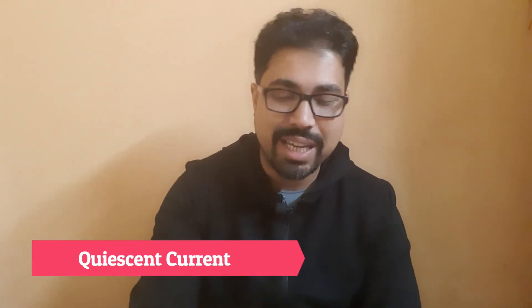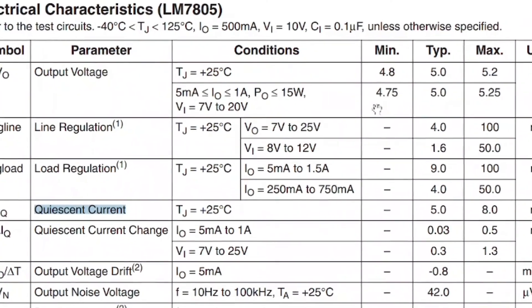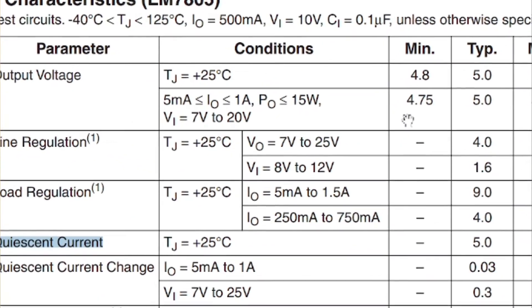The next parameter is the quiescent current, also called bias or standby current. This is the current the voltage regulator draws even when the output is not connected to any load — just the 7805 itself with 12V input and 5V output, with no load. According to the 7805 datasheet, this quiescent current is less than 8 mA.